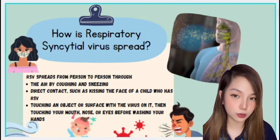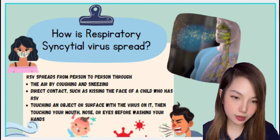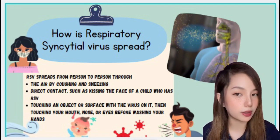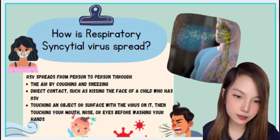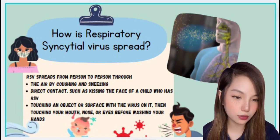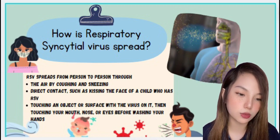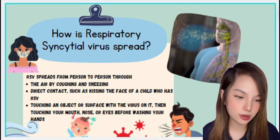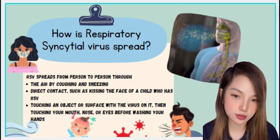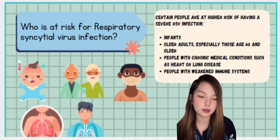How is respiratory syncytial virus spread? RSV spreads from person to person through the air by coughing or sneezing, through direct contact such as kissing the face of a child who has RSV, and by touching an object or surface with the virus on it, then touching your mouth, nose, or eyes before washing your hands.